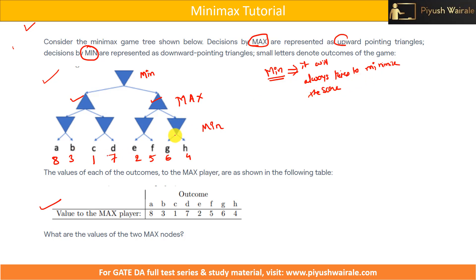For example, look at this min player. Out of G and H, which one has the minimum value? H, that is 4. So 4 is the minimum. This min player will go in this direction because there are less chances of winning for the max player — the min player always tries to minimize the max player's chance. So the value of this particular node is 4.